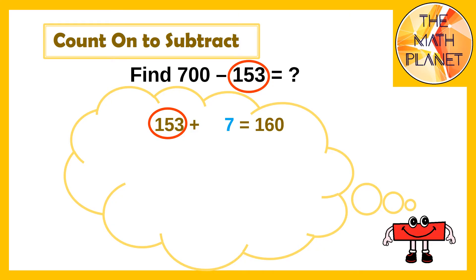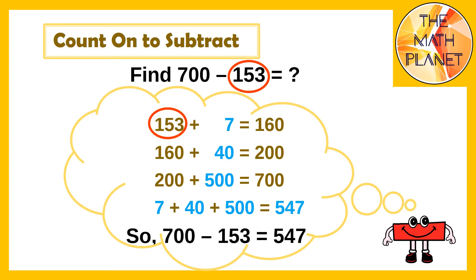Then I'll add 10s to make 100. So 160 plus 40 equals 200. Then I'll add 100s to reach the whole which is 700, so I need to add 500. This means I added 500 and 40 and 7 which equals 547. So the difference or the answer to this subtraction equation is 547.